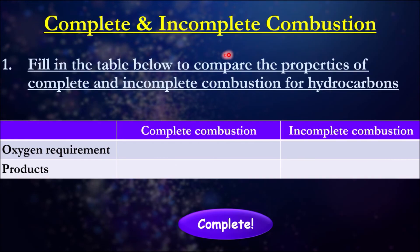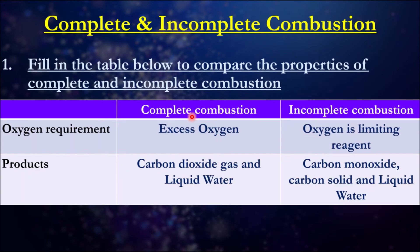Let's have a look at our first question: fill in the table below to compare the properties of complete and incomplete combustion for hydrocarbons. For complete combustion, you need an excess amount of oxygen. For incomplete combustion, oxygen is a limiting reagent — in other words, there is insufficient oxygen, so there's not enough to react with the fuel source. The products of complete combustion for hydrocarbons are carbon dioxide and water. For incomplete combustion, we could get carbon monoxide, carbon soot or solid carbon, and water.